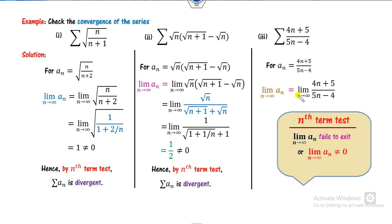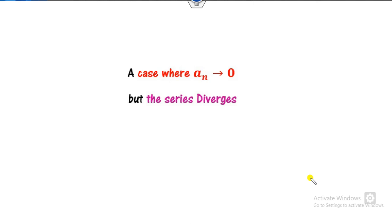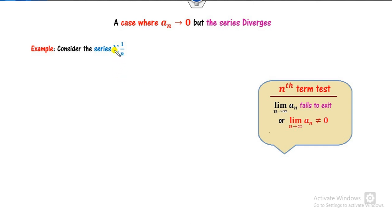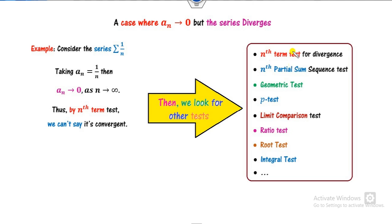For the last of these cases, the limit is clearly 4/5, which is non-zero — again a divergent series. Now we consider the case when the limit goes to 0 but the series is still divergent. Consider the series 1/n: clearly A_n goes to 0, but the nth term test requires a non-zero limit for divergence. So by the nth term test, we cannot conclude it is convergent; we are only sure about divergence when the limit is non-zero.